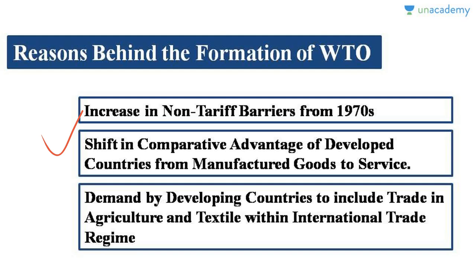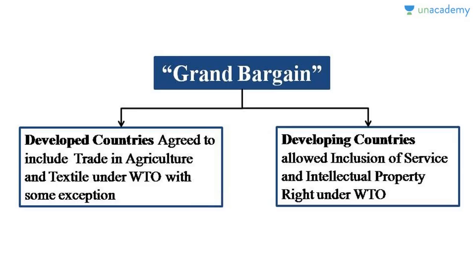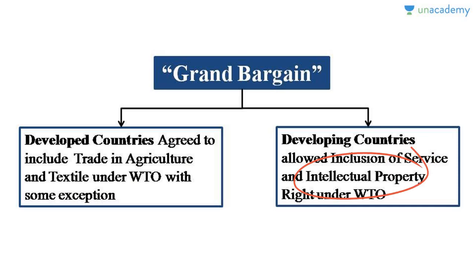The third reason was that developing countries wanted agriculture and textile to be included within the scope of international trade. All three — services, agriculture, and textile — were excluded under GATT and needed to be included. What happened was a grand bargain: developed countries agreed to include agriculture and textile within WTO, and developing countries agreed to include services and intellectual property rights. As a result of this grand bargain, WTO was finally formed.